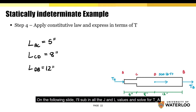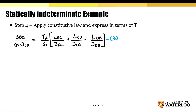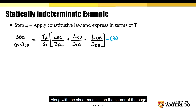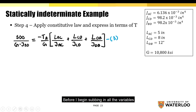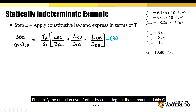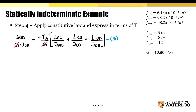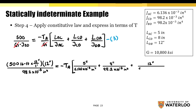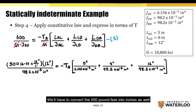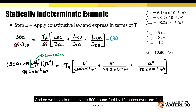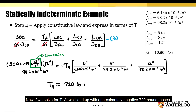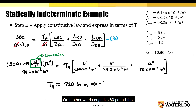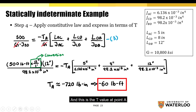On the following slide, I'll sub in all the J and L values and solve for T-A. I've summarized the values along with the shear modulus. Before substituting all variables, I'll simplify equation 3 by cancelling out the common variable G. Since almost all variables are in inches, I'll convert the 500 pound-feet into pound-inches by multiplying by 12 inches per foot. Solving for T-A gives approximately negative 720 pound-inches, or negative 60 pound-feet.